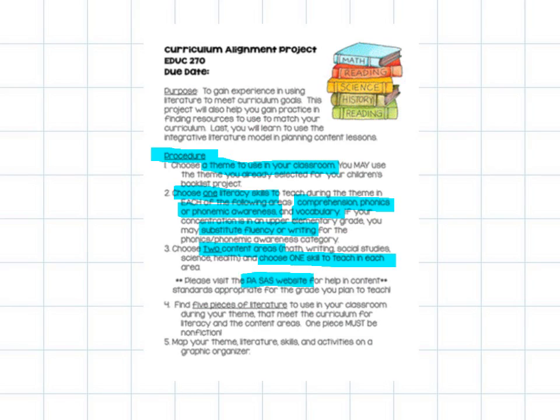Step number four is choosing five pieces of literature. And this is going to be your text set. This is going to be the text that is both nonfiction and fiction that go along with your theme. We did this often when we do our weekly literature sharing. We think about all the different things that we can do around one piece of literature. Your job would now be to pick several pieces of literature, and by several, I mean five.